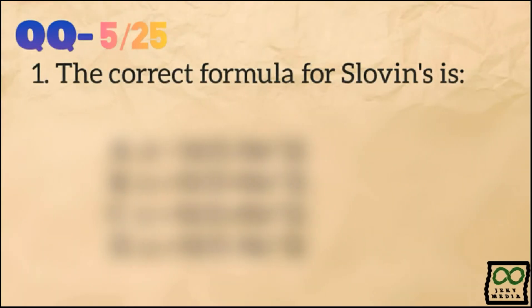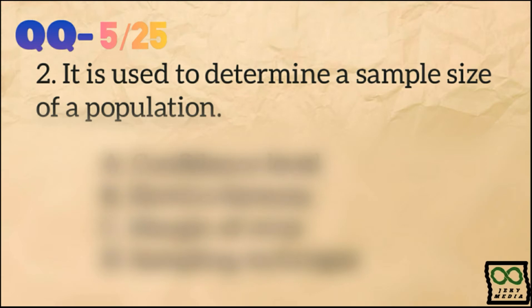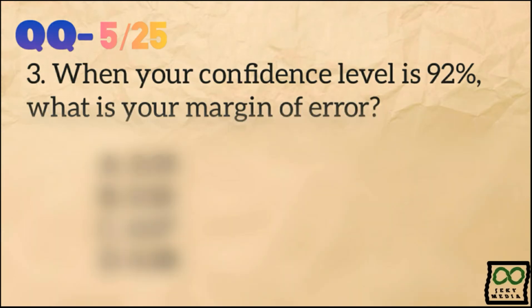Number 1. The correct formula for Slovin's is. Number 2. It is used to determine a sample size of a population.